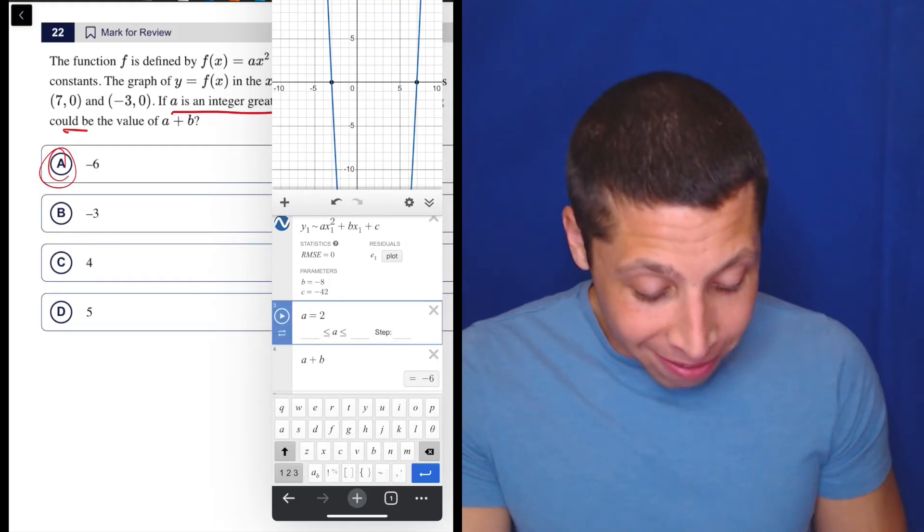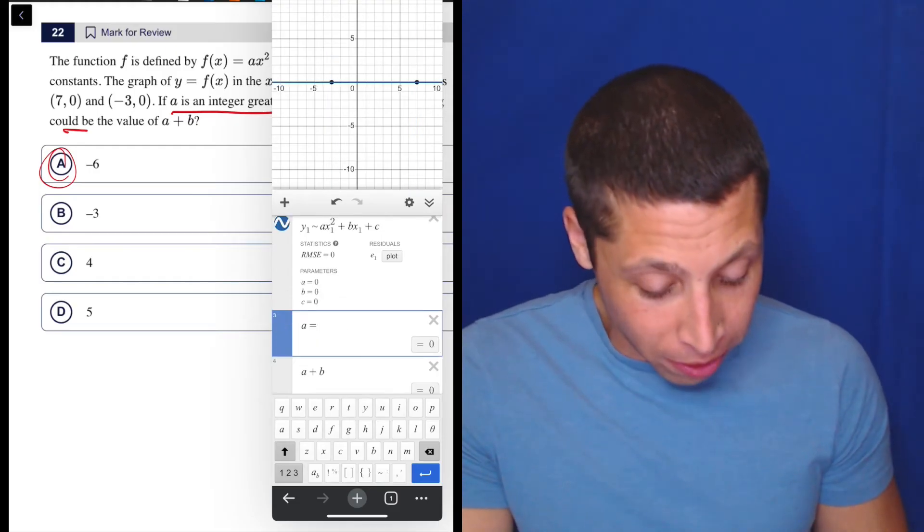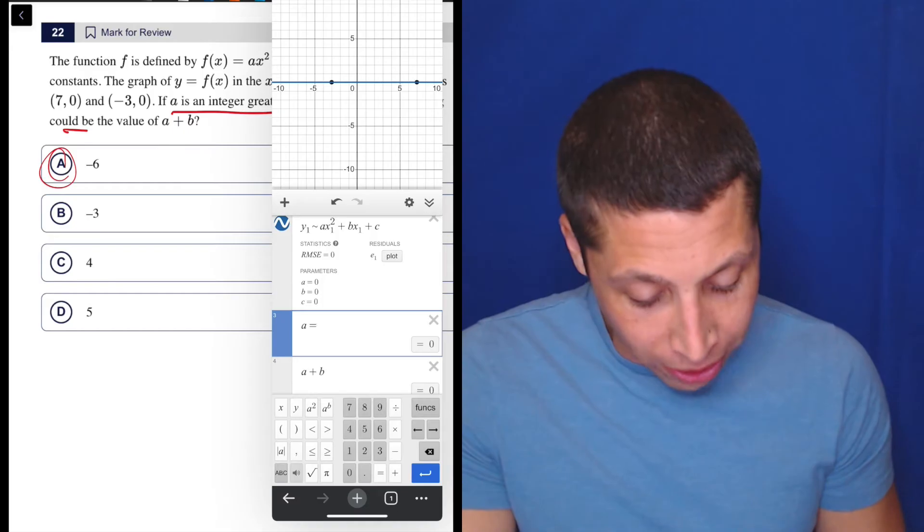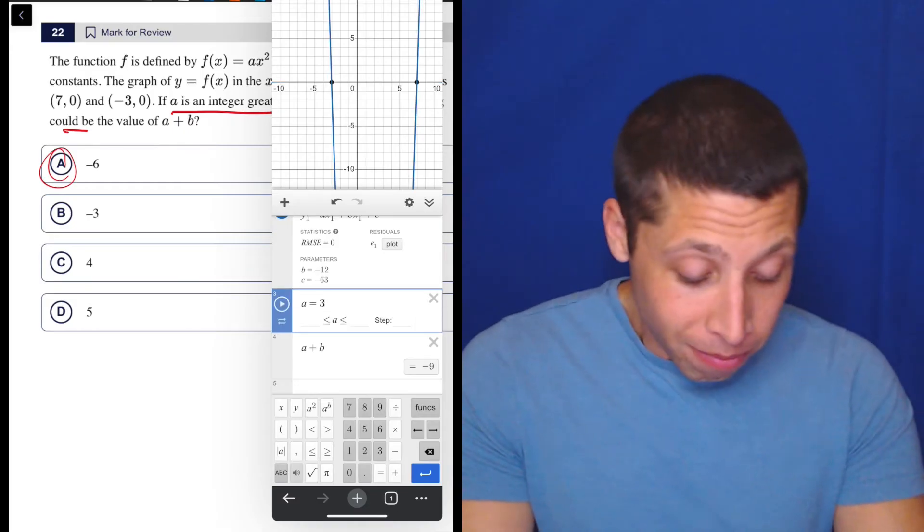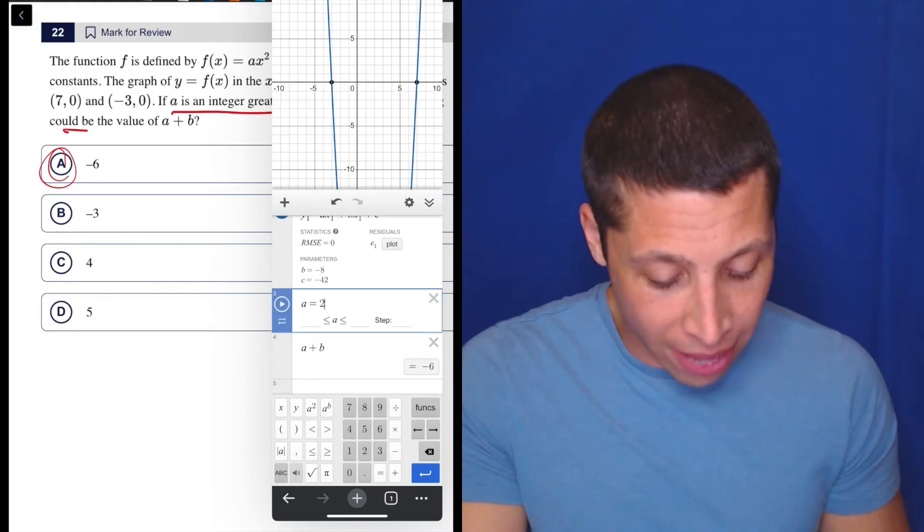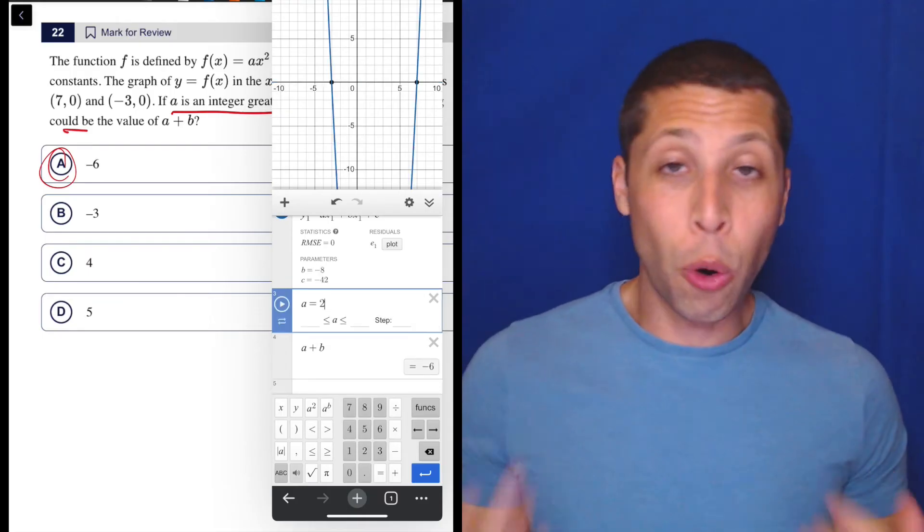So yeah, I mean, look again, it says A has to be an integer greater than two. So if we had made it a different integer, like three, this wouldn't have worked. We wouldn't have gotten one of the answers that's there, but this is why you just assume the simplest thing. And then you can always play with it from there and see what happens.